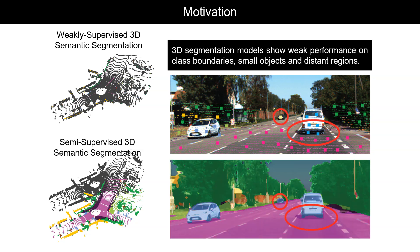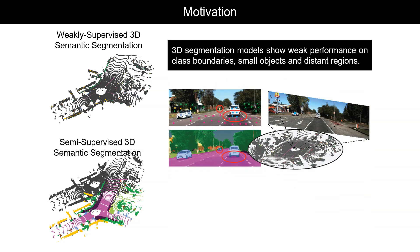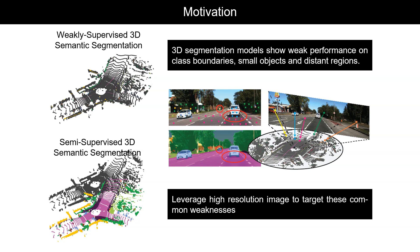With the aid of RGB color channels, 2D segmentation models are better able to separate class boundaries, and with the denser representation, are better able to detect and segment small objects and distant regions. Our goal in this work is to leverage this high-resolution image within our 3D pipeline to target these common weaknesses.